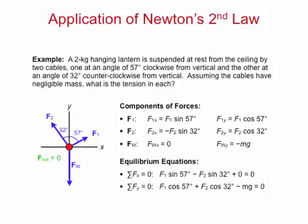Now we write down the equilibrium equations, adding up the x components and setting the sum to 0, and doing likewise for the y components. Notice that these two equations have two unknowns, F1 and F2, the tension in each cable. This is precisely what the problem asks us to find.